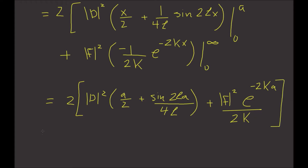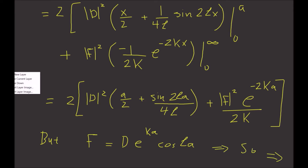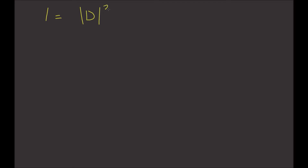Now we know that F is equal to D times e to the kA times cosine of L times A. Substituting this in, we have 1 equals modulus D squared times a plus sine of 2La divided by 2L, plus cosine squared of La divided by K.